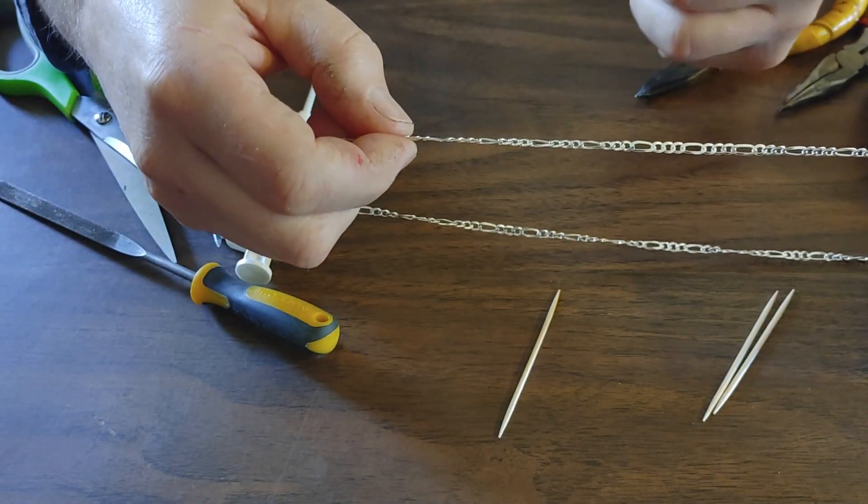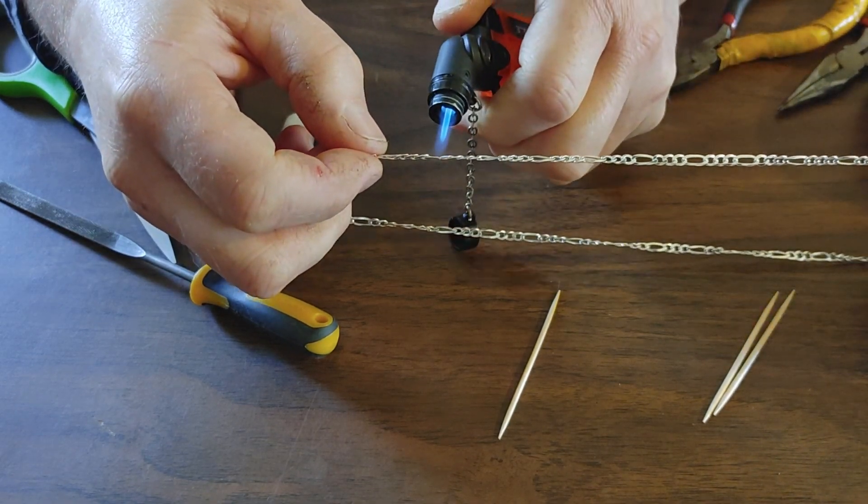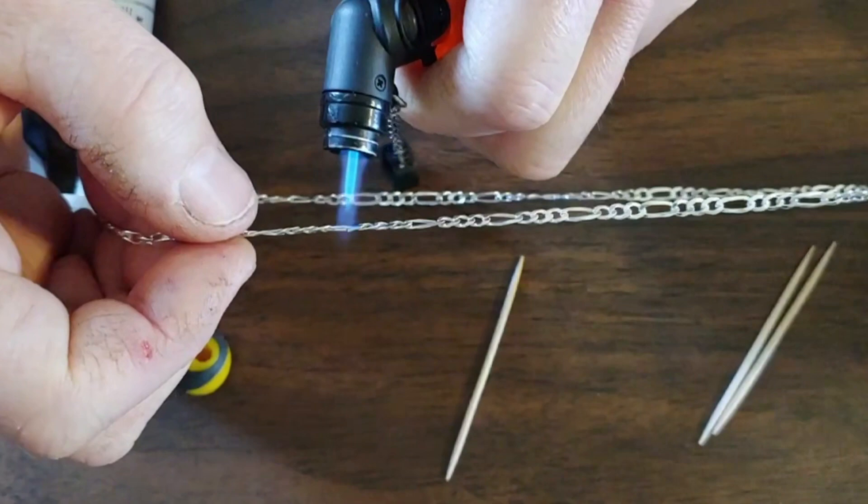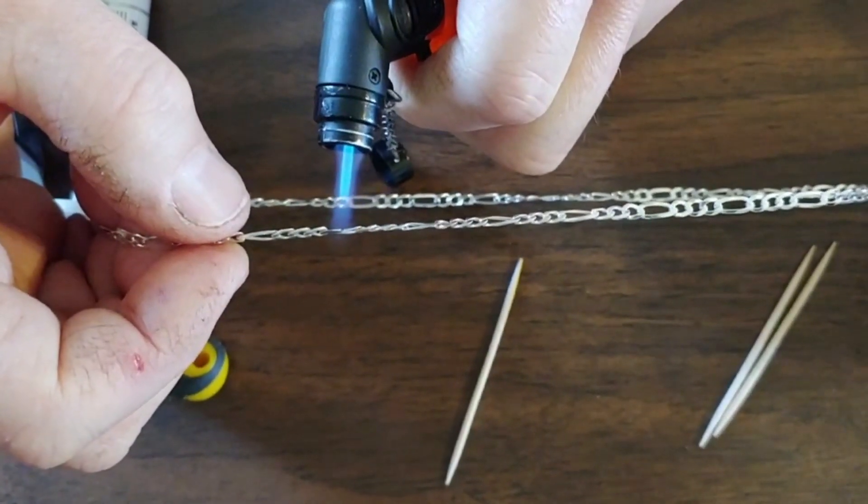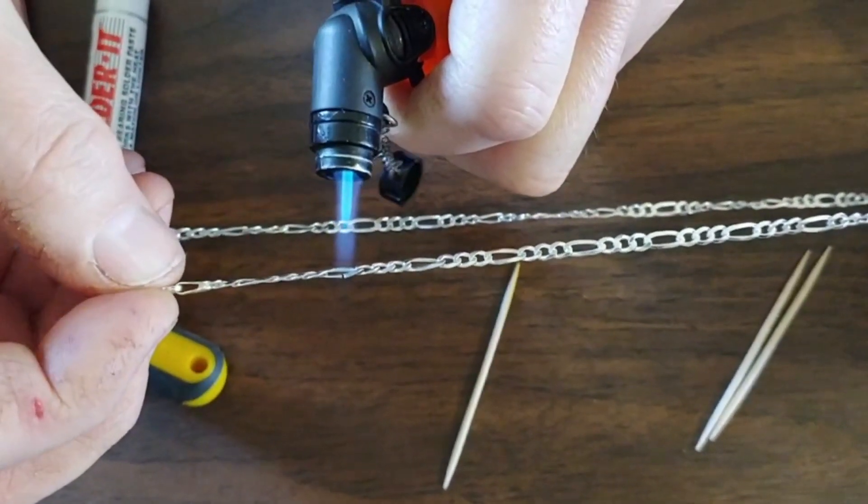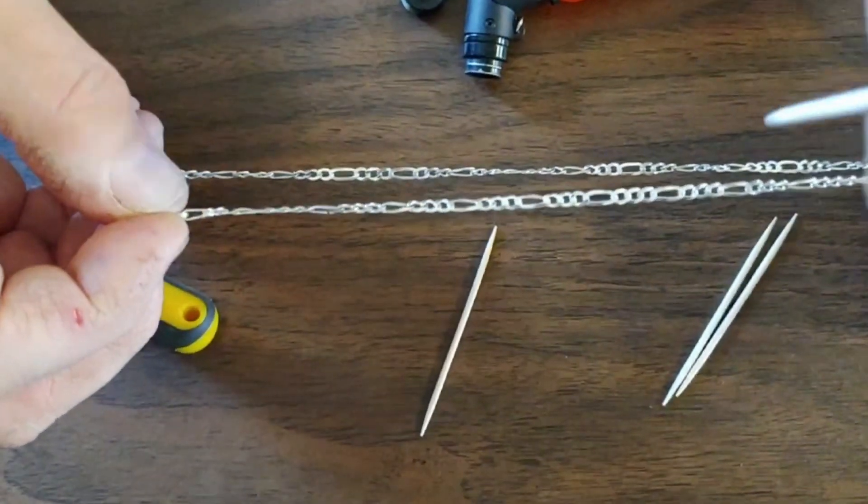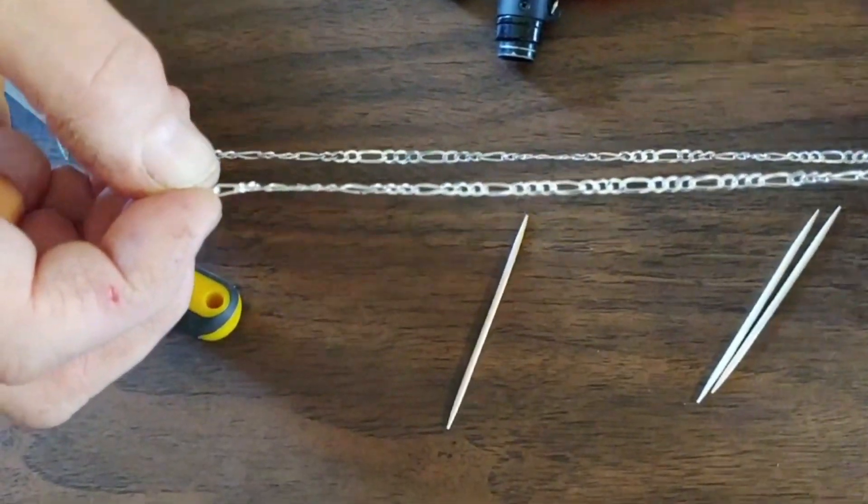Now that the chain is secure, it's time for step three: preheat the repair link. Use the butane lighter to warm up the metal so the solder paste can attach. Preheating the metal excites the molecules so they can more easily bond with the solder molecules. Take your time. When you feel a little heat in your fingertips, the silver is ready.